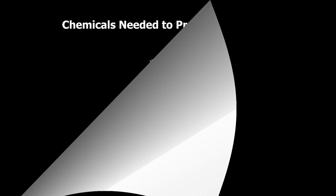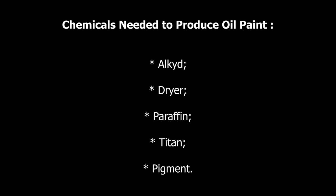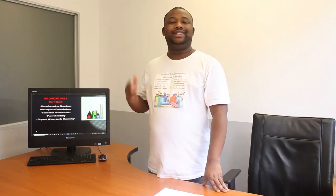As I said earlier, in this video I'm going to tell you about the chemicals you need to manufacture oil paint. Here we go — chemicals needed to produce oil paint: we need alkyd, a dryer, paraffin, titan, and pigment. That's it.